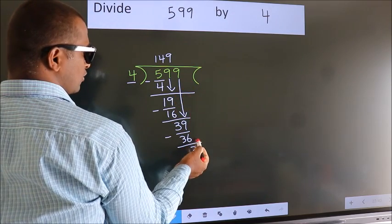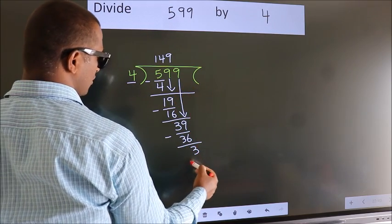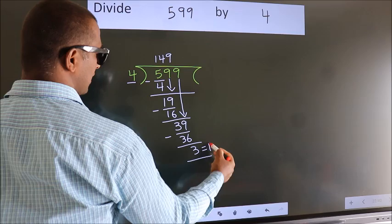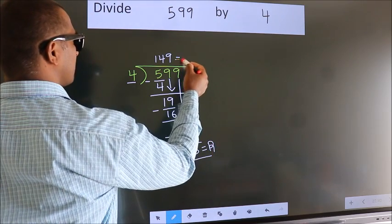No more numbers to bring it down. So we stop here. This is our remainder. This is our quotient.